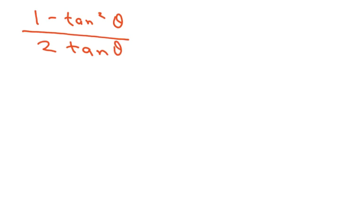So what I'm going to do is factor out a 1 half. When you factor out a 1 half, you're going to write it 1 half times 1 minus tan squared of theta. And the bottom is going to be just tan of theta.